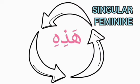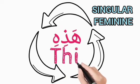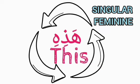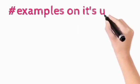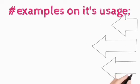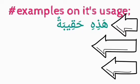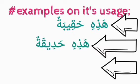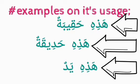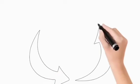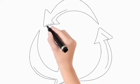Here we have hazihi, which means 'this'. This is the feminine form for haza. Examples on its usage: hazihi hakibatun — this is a bag; hazihi hadiiqatun — this is a garden; hazihi yadun — this is a hand.